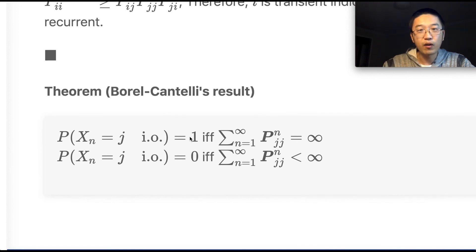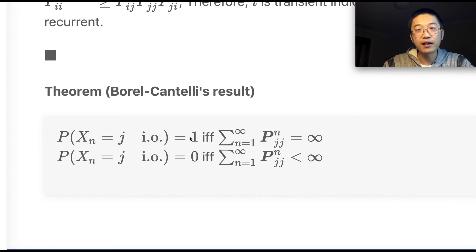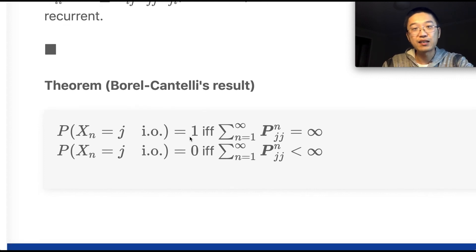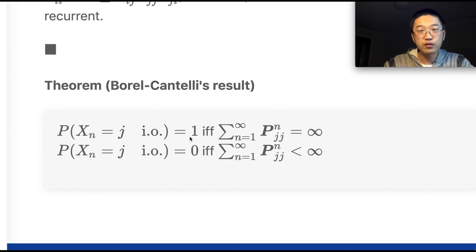Σ_n (P^n)_{ij} = ∞ is equivalent to X_n = j for infinitely many times with probability one; Σ_n (P^n)_{ij} < ∞ is equivalent to X_n = j for infinitely many times with probability zero. This is a direct result from the Borel-Cantelli theorem, which we will prove in a future series on measures and functional analysis. Smash the like button and subscribe for future videos!